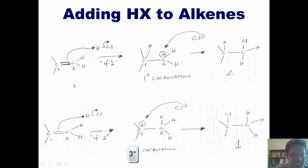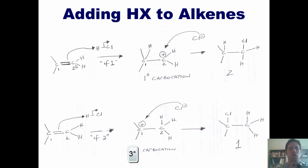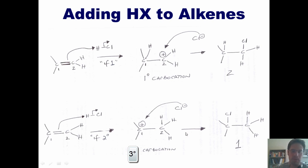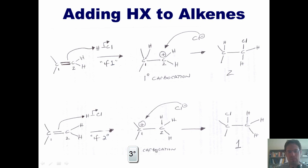Beginning with the starting material, I'm adding hydrogen chloride. The hydrogen can attach to carbon 1 or carbon 2. According to Markovnikov's rule, the hydrogen attaches to the carbon that has more hydrogens — hence it attaches to carbon 2. The chlorine attaches to the carbon that has fewer hydrogens — hence it attaches to carbon 1, giving us product 1. This is because product 1 goes through the more stable tertiary carbocation intermediate, as opposed to the less stable primary carbocation necessary to form product 2.